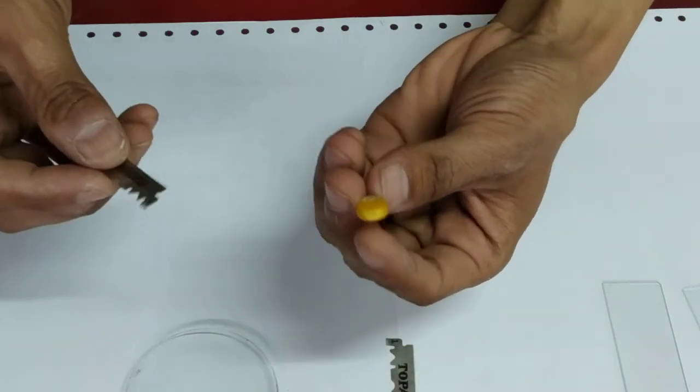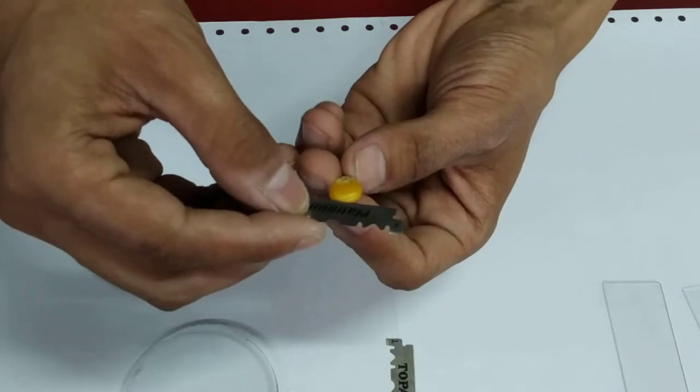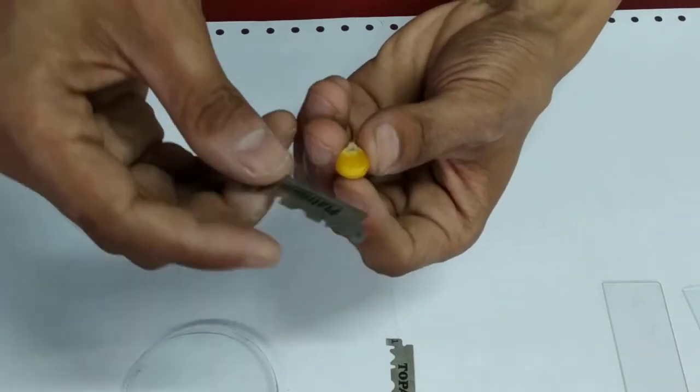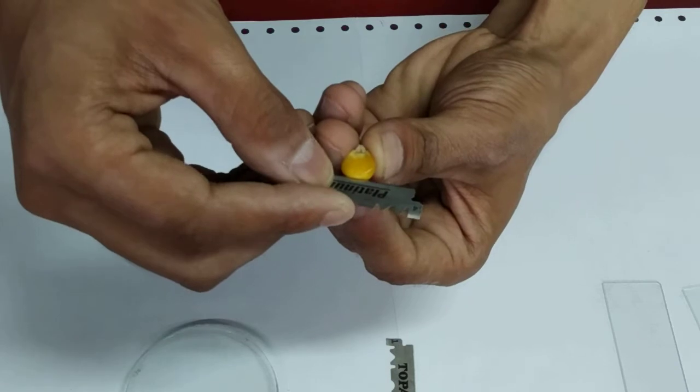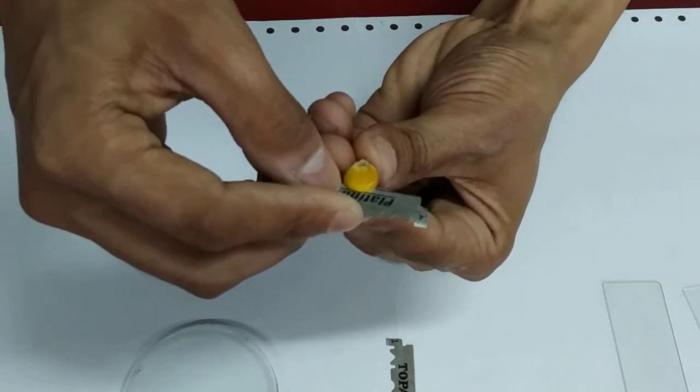By longitudinal section what it means is we are not going to cut it in two equal halves, but rather we are going to cut from the top to the bottom. So just take a look at this. First I am going to cut through the middle portion.